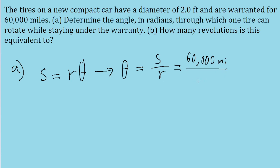As for R, that's just going to be the radius of the wheel. We're told that the tire has a diameter of 2 feet, so the radius of one wheel is going to be half that, one foot.